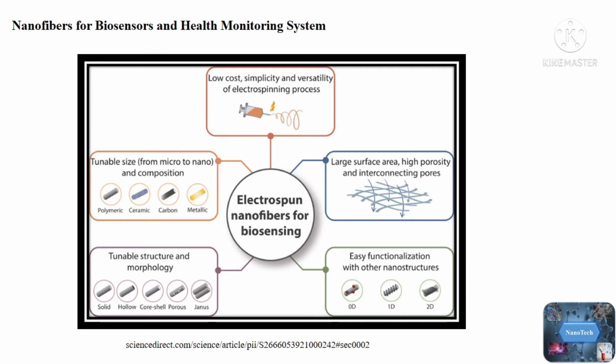Furthermore, because electrospun nanofibers have high porosity, they are more accessible and have low mass transport resistance, allowing for better analyte diffusion across the sensing layer. Depending on the sensing application, the nanofibrous membrane should also meet mechanical properties, stability, and hydrophilicity requirements, which can be met by adjusting the composition and electrospinning parameters.